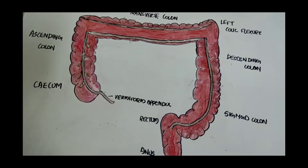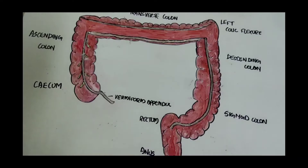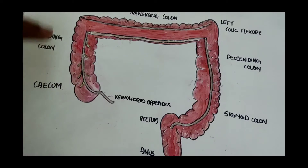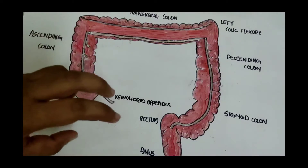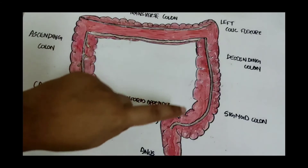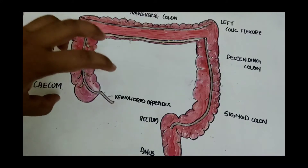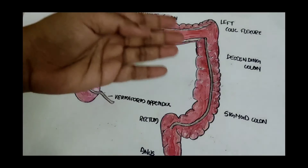The large intestine receives waste matter from the small intestine, so it is adapted for the storage of matter received from the small intestine. There is presence of columnar epithelium, which is helpful in absorption. Another important feature is that the large intestine is wider in caliber compared to the small intestine, and this caliber is greater towards the first parts and tapers towards the end.